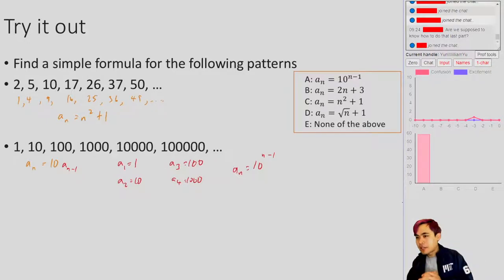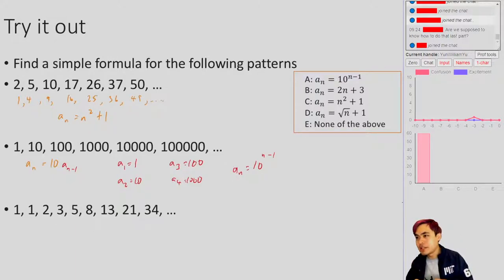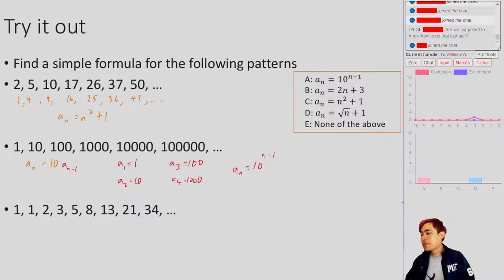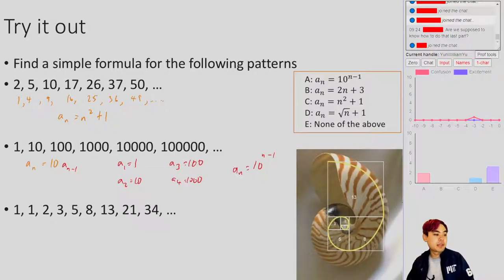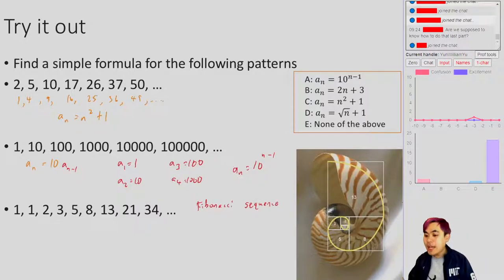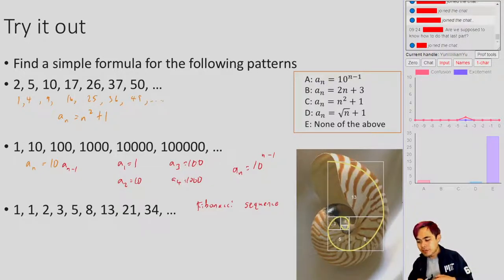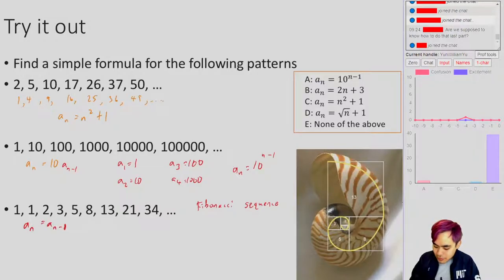Let me give you another very complicated one - I don't expect you to be able to do this one. This happens to be the Fibonacci sequence, which some of you may have heard of. The Fibonacci sequence has a lot of nice connections to things like the golden ratio. The way you normally see this in school is you define it as a_n is equal to a_(n-1) plus a_(n-2), where the first term is equal to 1 and the second is equal to 2 - wait, 1. Each time you're just adding up the two previous numbers.